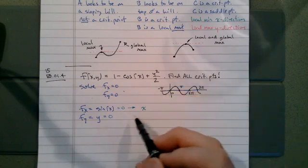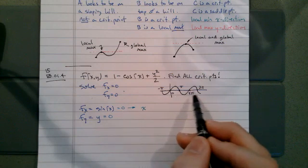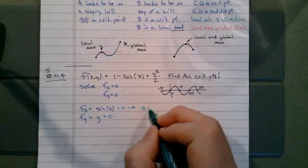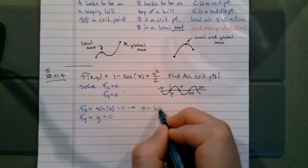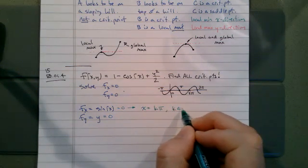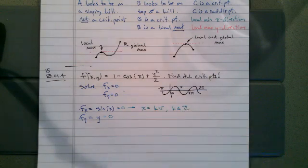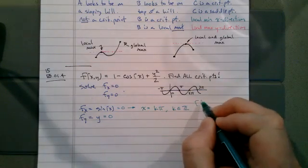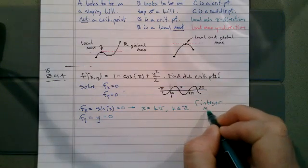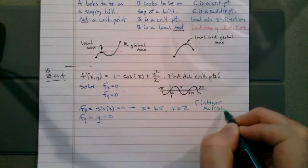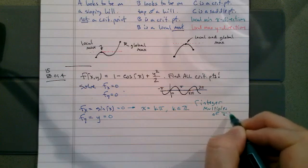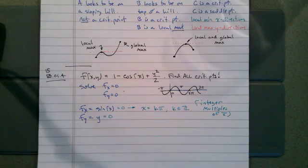So sine of x equals zero whenever x is some multiple of pi. So x equals k times pi, where k is an integer. We're looking for all the integer multiples of pi. All the integer multiples of pi are where sine is going to equal zero.